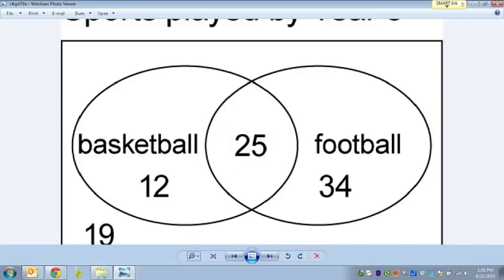And then you'll notice that the middle number here is 25. So these are the people that represent how many people like basketball and football. They like them both. And so it's not just one, it's they like them both.